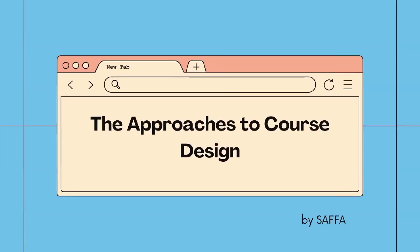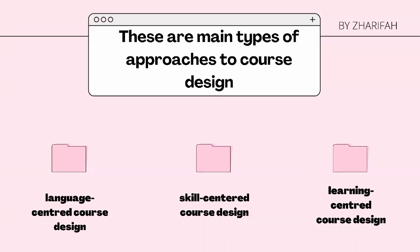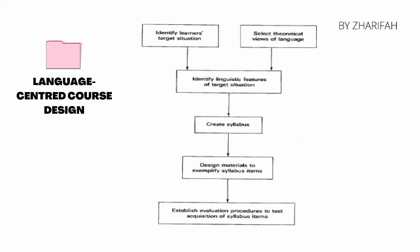Now I'm going to explain about the approaches to course design. There are three main types: first, language-centered; second, skill-centered; and the third, learning-centered. Language-centered course design is the simplest approach that focuses on the linguistic performance of the learner in the target situation. As we can see in the steps of this approach, it is systematic, static, and inflexible, since the teacher has already conducted the syllabus and made it learner-restricted instead of learner-centered.